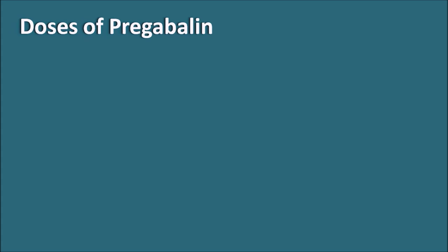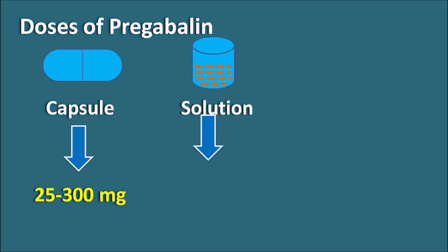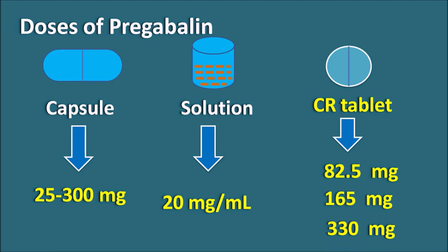The dose of pregabalin depends on the clinical use and the dosage form. When given as a capsule, different doses are available from 25 to 300 mg. When given as a solution, it is available at a strength of 20 mg per ml. In the case of CR tablets, they are available at three strengths: 82.5 mg, 165 mg, and 330 mg — a doubling pattern. The CR tablet should not be considered an alternative for capsules and solution because the release pattern is different from immediate release preparations.